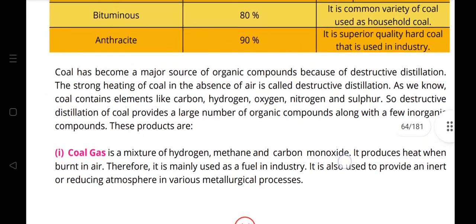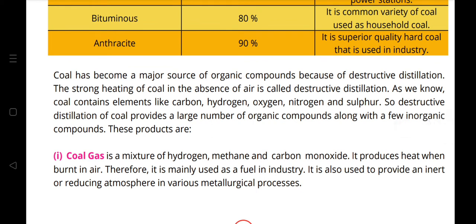Coal has become a major source of organic compounds because of destructive distillation. The strong heating of coal in the absence of air is called destructive distillation. Since coal contains carbon, hydrogen, oxygen, nitrogen, and sulfur, its destructive distillation provides a large number of organic compounds along with a few inorganic compounds. The first product is coal gas — a mixture of hydrogen, methane, and carbon monoxide.